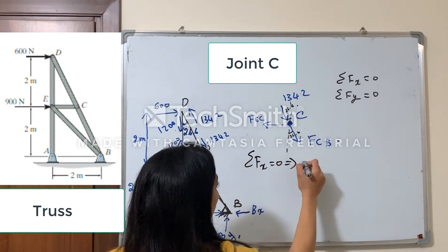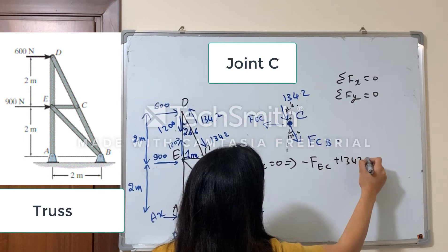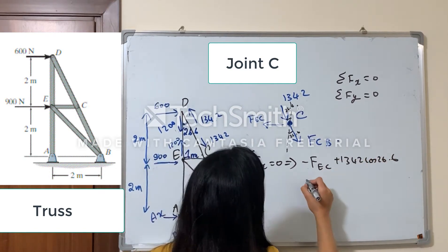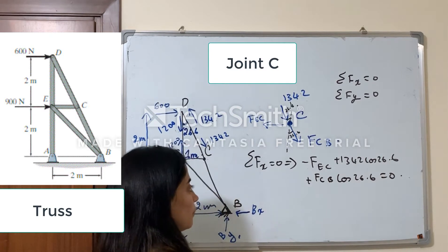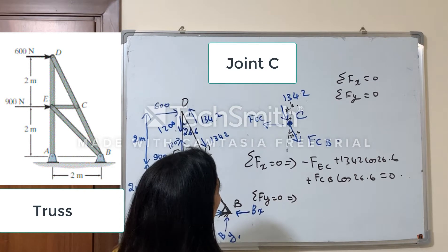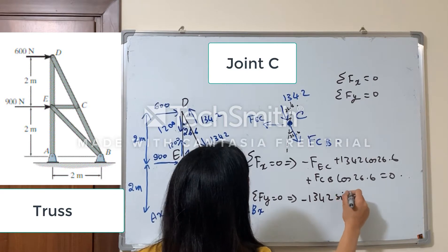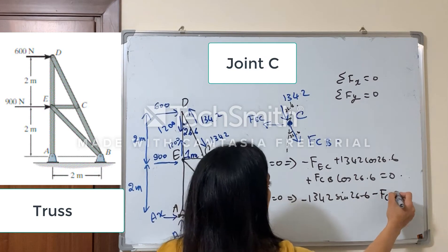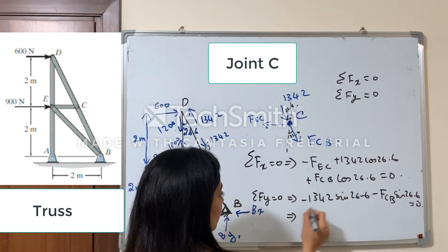Sum of Fx equals zero gives me: minus FEC plus 1342 cosine 26.6° plus FCB cosine 26.6° equals zero. Now sum of Fy equals zero will give me: minus 1342 sine 26.6° minus FCB sine 26.6° equals zero.